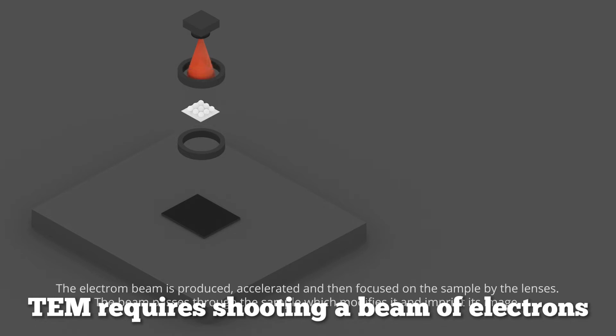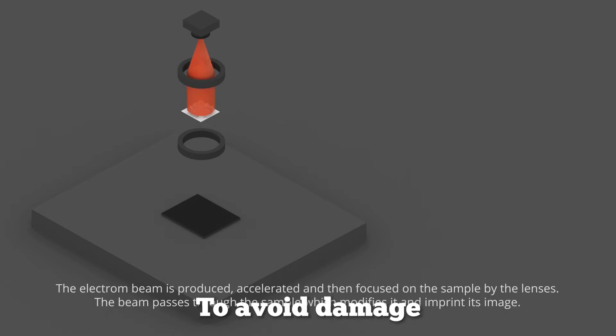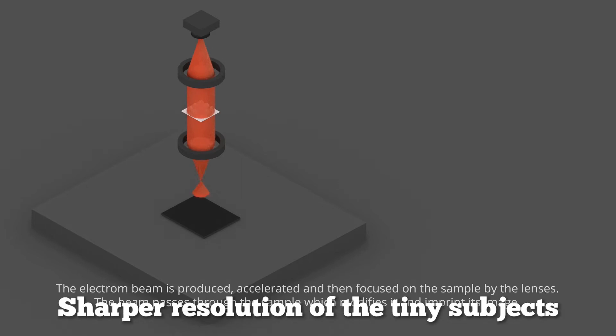TEM requires shooting a beam of electrons into the sample at a low voltage to avoid damage. The unique setup also provides sharper resolution of the tiny subjects.